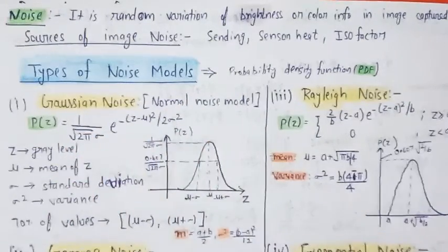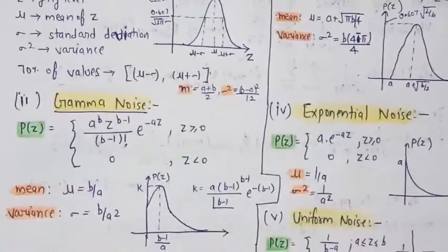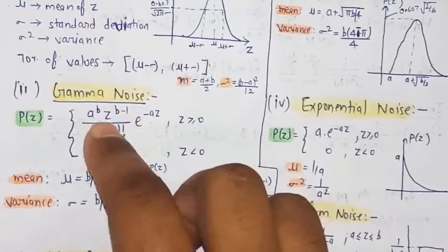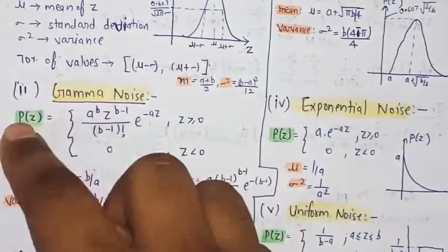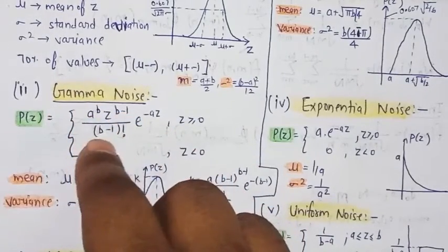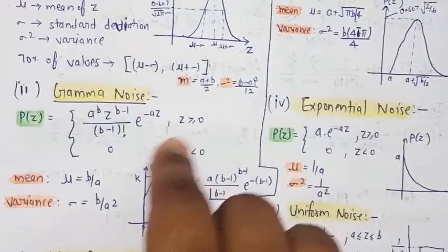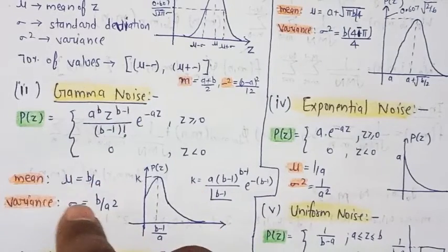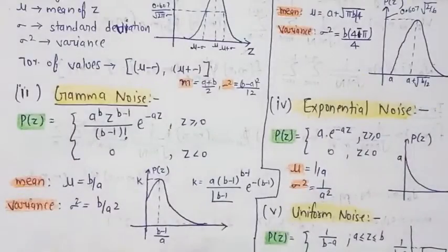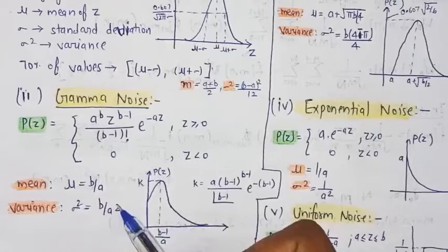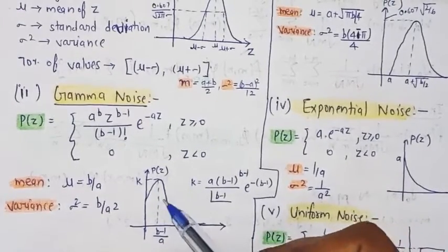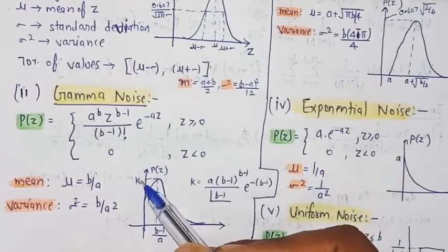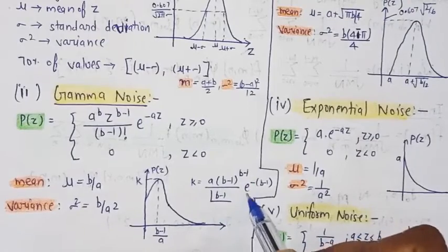The second noise model is the Gamma noise model. If (b − 1)! is your gamma value, then p(z) = (a^b · z^(b−1)) / (b−1)! · e^(−az) when z ≥ 0, and 0 when z < 0. The mean value is b/a and the variance σ² = b/a². The diagram shows a slope, and at the top of the slope the value is (b−1)/a, where k = (b−1)^(b−1) / ((b−1)! · e^(−(b−1))).